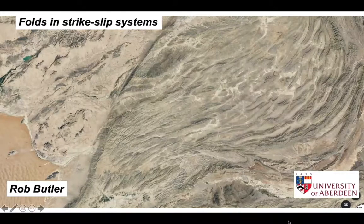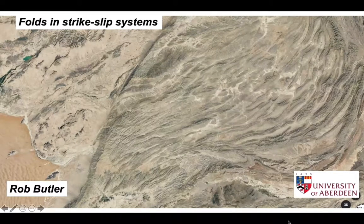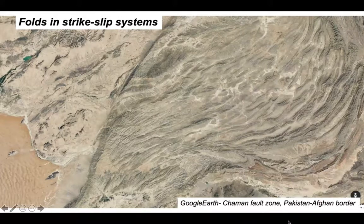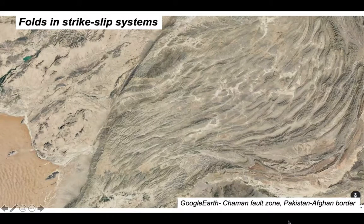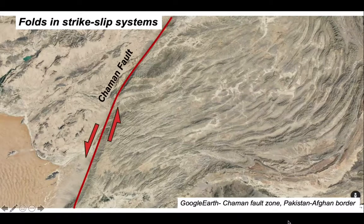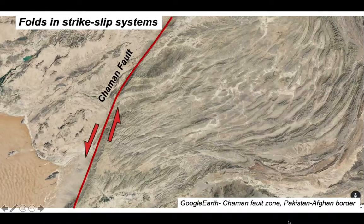Faults associated with strike-slip fault systems can be amongst the largest structures on the continent. This satellite image is over 600 kilometers across and shows an active strike-slip zone, the Chaman fault, running close to the Pakistan-Afghan border.